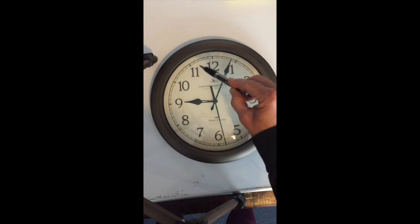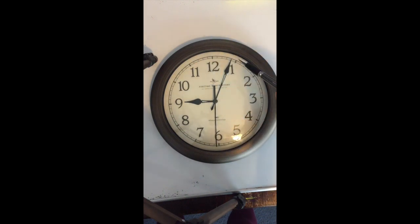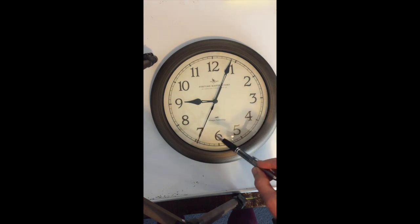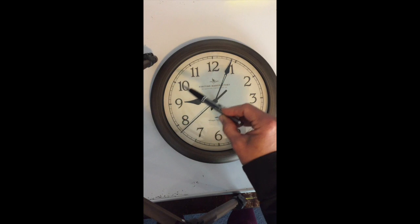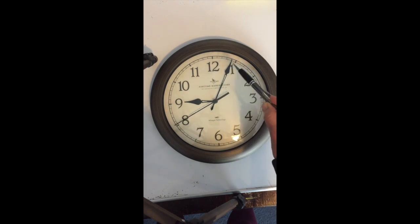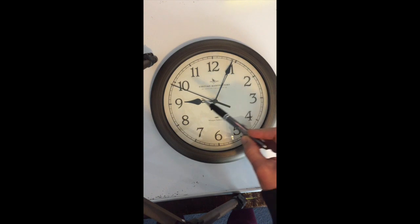So as this second hand is moving around and completes a full circle, the minute hand is going to advance. Let's watch. Right now the second hand is approaching the 8. When it gets to the 12, this minute hand is going to move over one space.